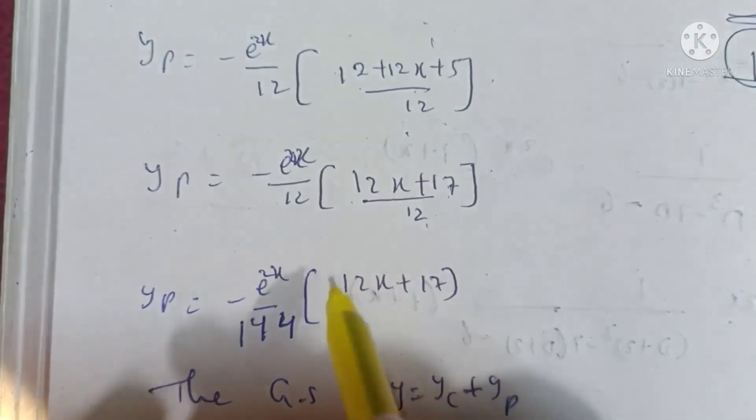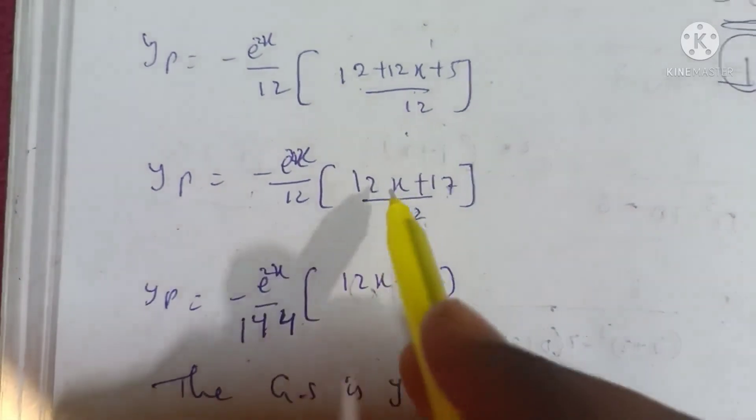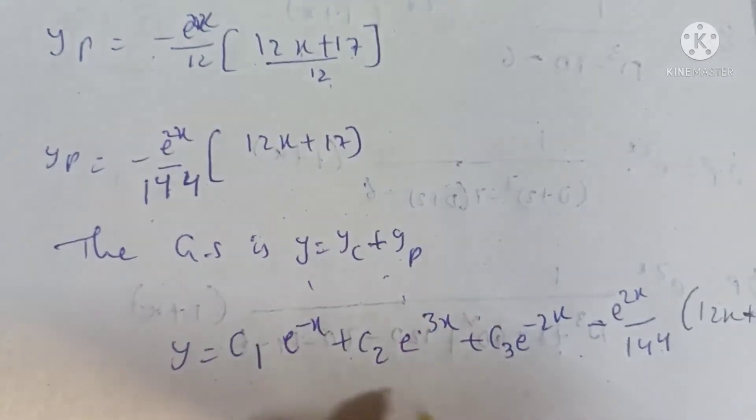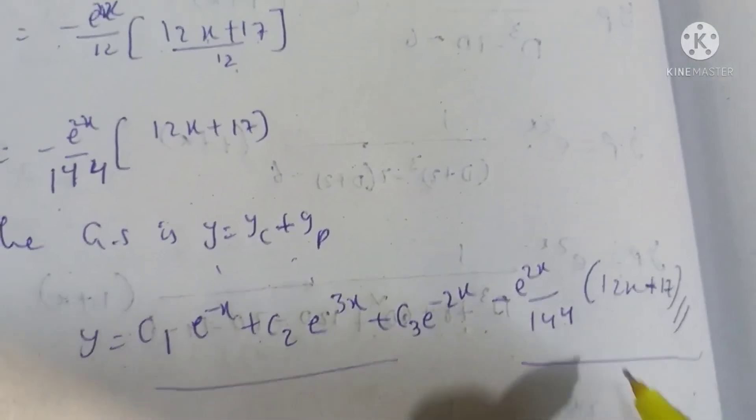So yp = -e^(2x)/144 × (12x + 17). The general solution is y = yc + yp, substituting the yc and yp values.